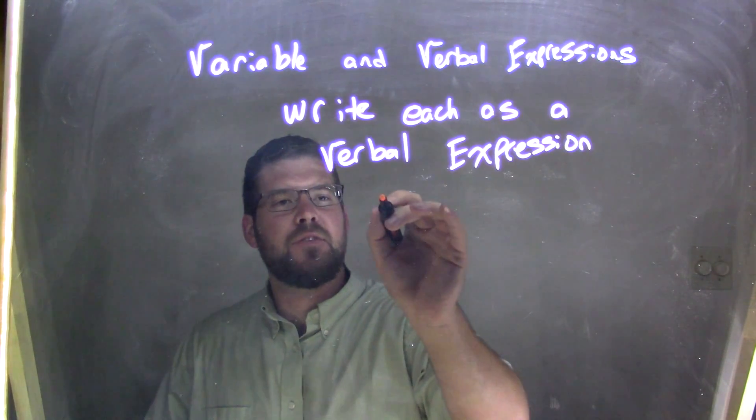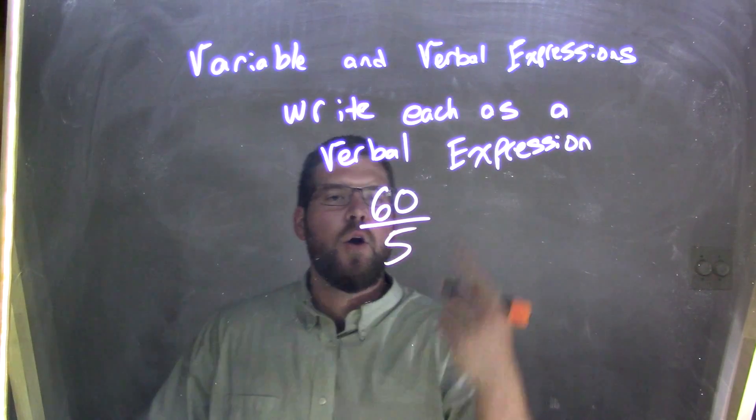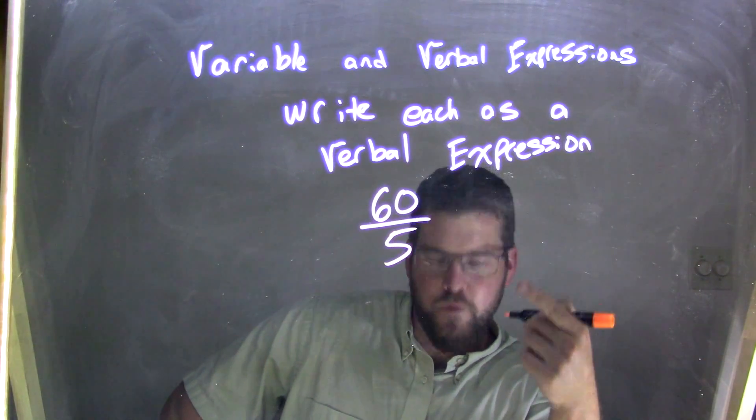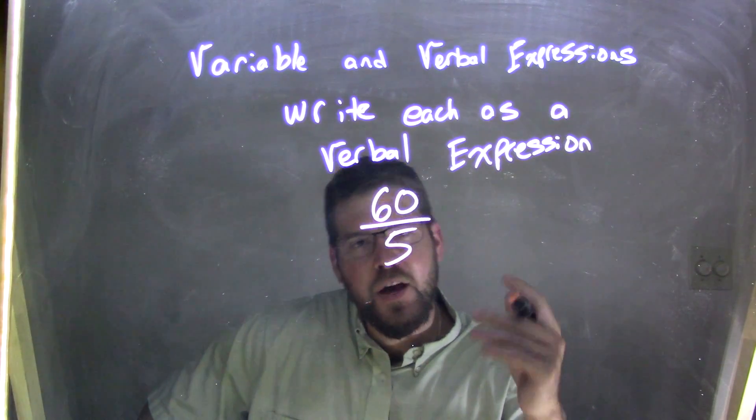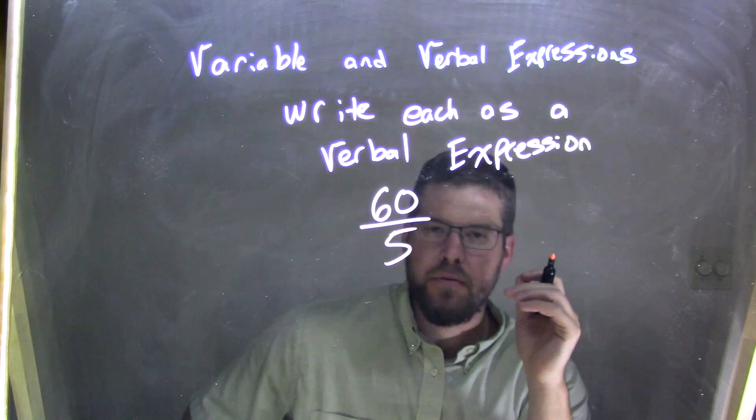So, if I was given this, the number 60 over the number 5, right there I'm seeing 60 divided by 5, 60 over 5. I can write this, but instead of writing 60 divided by 5, I need another word.